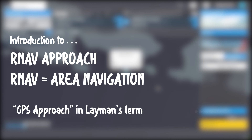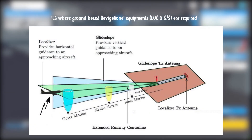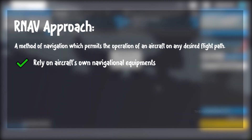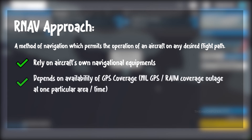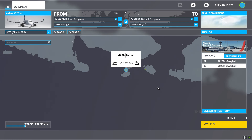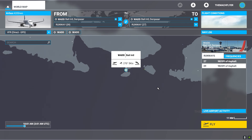Different from the ILS, where you have the ground-based guidance system like localizer and glide slope to guide the aircraft down to the runway, the RNAV approach relies on its own on-board navigation equipment together with satellite assistance to conduct an approach both laterally and vertically. This kind of approach has become quite common nowadays because of its simple procedure — mostly a straight-in approach — and it is time-saving and fuel-saving.